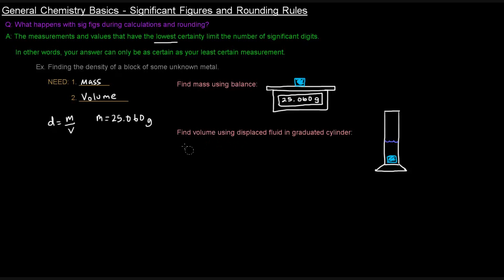You find the volume by measuring the amount of displaced fluid in a graduated cylinder. You measure the volume of just the fluid, then drop the block in, take the new measurement of the volume, and subtract the two to find the volume the block displaced. Let's say you find the volume to be 3.5 milliliters.